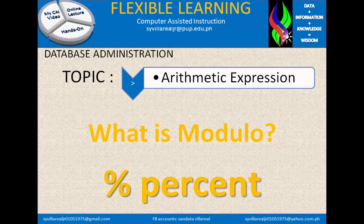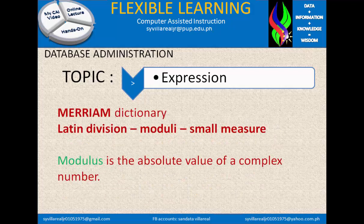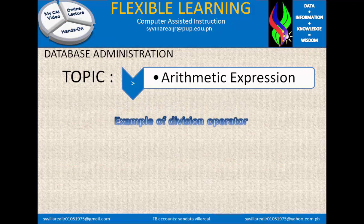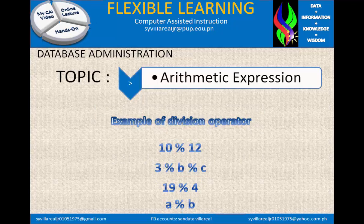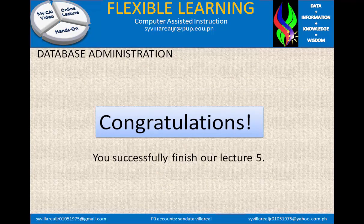Now, what is modulus? Modulus uses the percent sign. In the Merriam Dictionary, modulus came from the Latin 'modulus', meaning small measure. Modulus is the absolute value of a complex number, whereas division deals with a larger part. Examples of the modulus operator: 10 % 12, 3 % c, 19 % 4, A %. Congratulations on successfully finishing the arithmetic expression section.